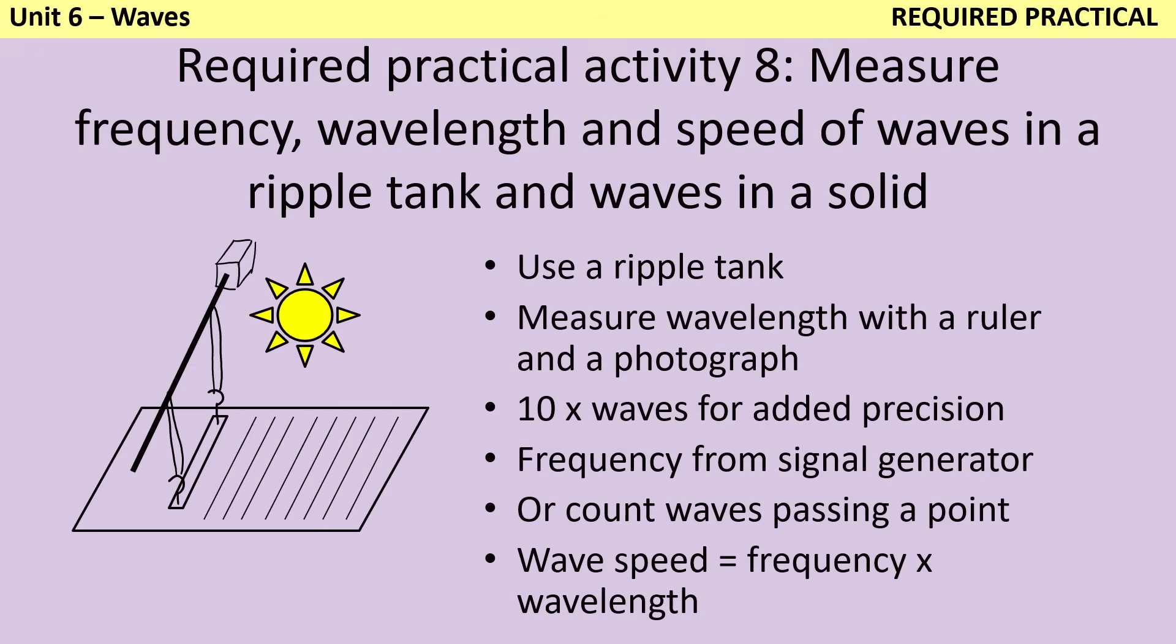Required Practical 8 is about making measurements of waves, either in a ripple tank or by looking at a string with a signal generator attached. There are a lot of different ways that the exam board could structure a question about this required practical, but typically you might be asked how you could set up an experiment to collect data that would allow you to calculate wave speed. In order to do this, you need the wavelength and also the frequency. Wavelength is literally a length, and you can measure it with a ruler.